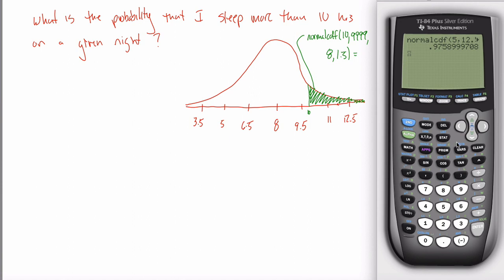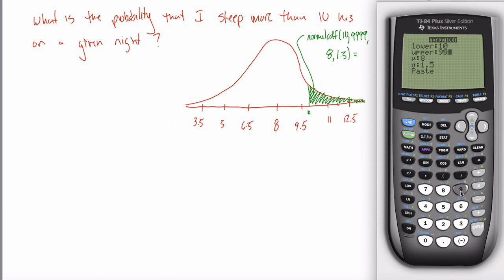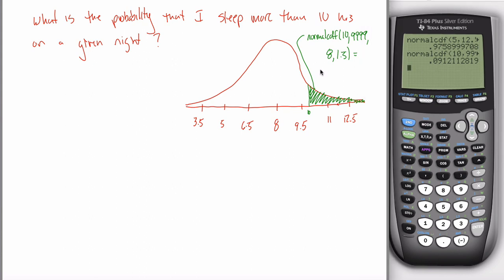Go to second, then distribution, find normal CDF. If you have the user-friendly version it'll prompt you; otherwise enter the four values with commas: lower bound 10, upper bound a bunch of nines, center 8, spread 1.5. Hit enter and it gives 0.0912, which formatted as a percentage rounded to two decimal places is 9.12%. That's the purpose of this example: when you're missing an upper bound, just put in a bunch of nines.